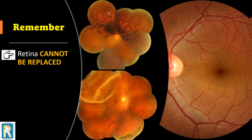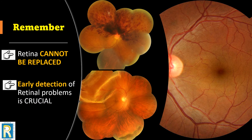All these different types of retinal diseases have something important in common. As explained in the first video, the retina cannot be replaced. Therefore, for any person with a retinal disease, it is very important that we diagnose the condition early so that we can prevent severe loss of vision.